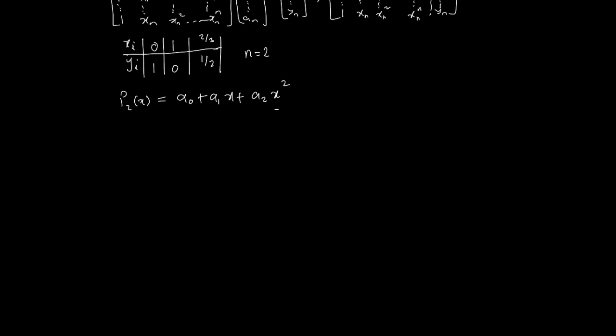Which would mean that what we're trying to say then is that p2 of 0 should be 1, which implies that, substitute, instead of x, put in 0, and as you put it in here, both these will become 0, and this will also become 0, which will leave you with just a0, and that should be equal to 1.